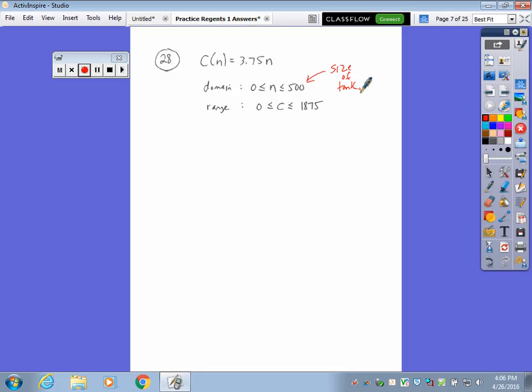And so your cost, if you bought 0, your cost would be 0, and if you bought 500, your cost would be 1,875.